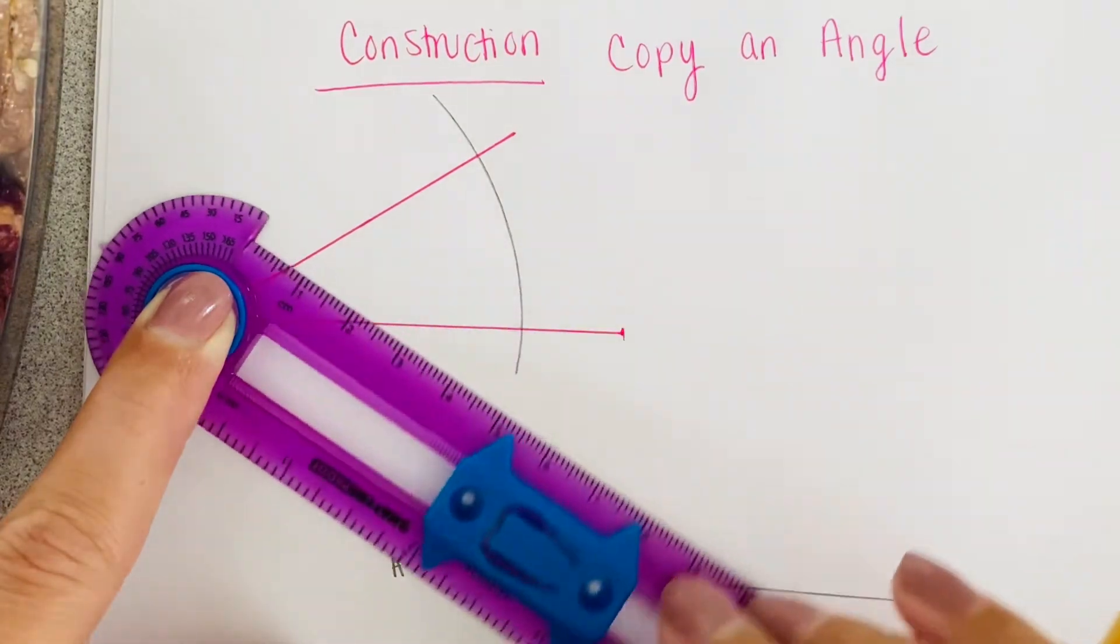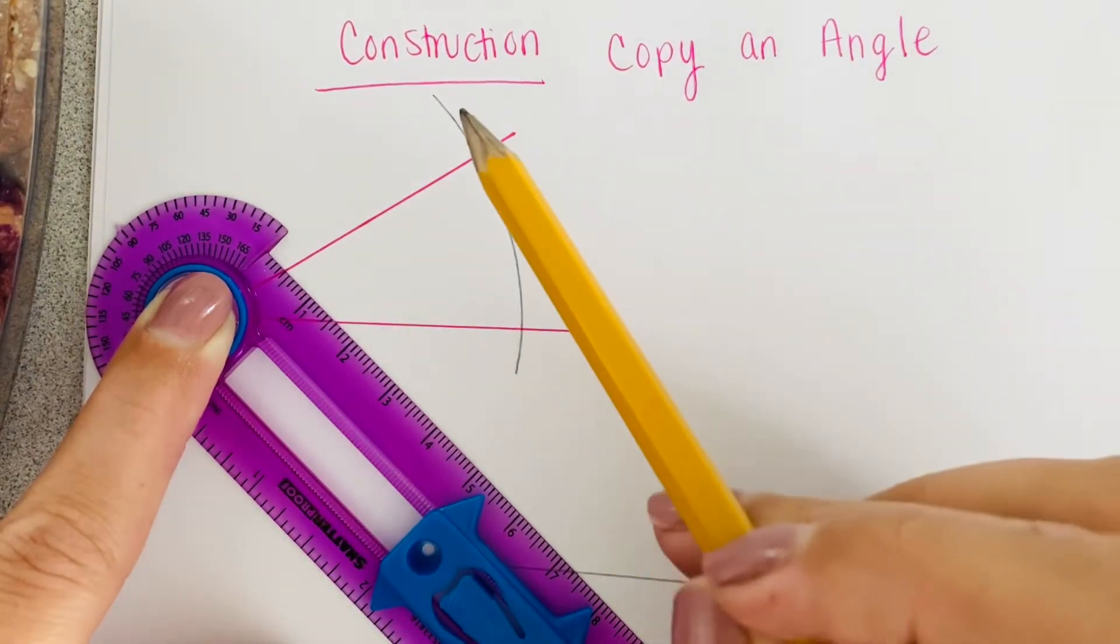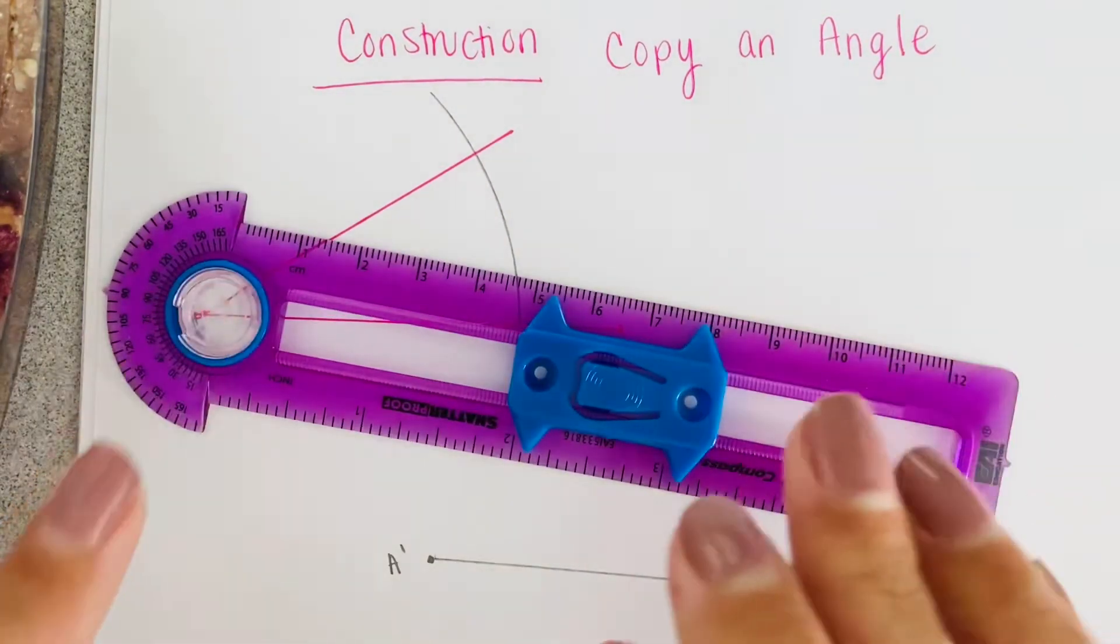One large arc that goes through each side of my angle. So one large arc, do not scratch back and forth. And then we're not going to mess with our protractor.